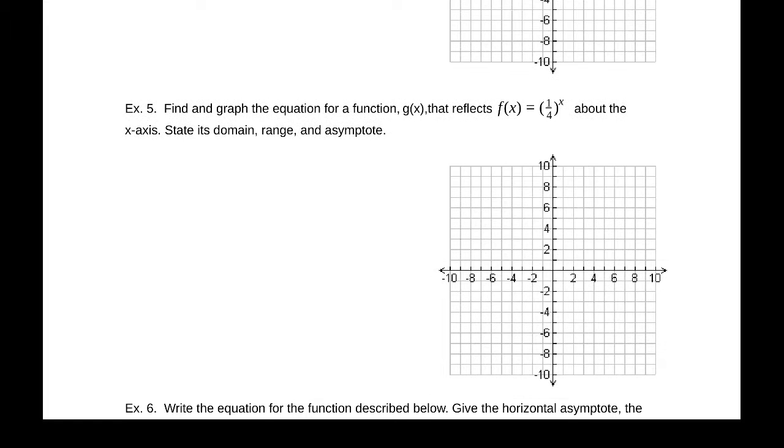Example five, find and graph the equation for the function g(x) that reflects f(x) = (1/4)^x about the x-axis. We are reflecting across this axis, which means we are flipping our y values, our outputs is what's changing. So we'll make those outputs negative. Let's go ahead and write the domain now that we have that going on.